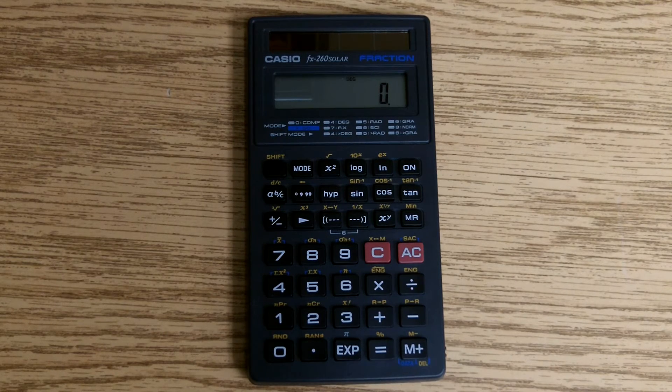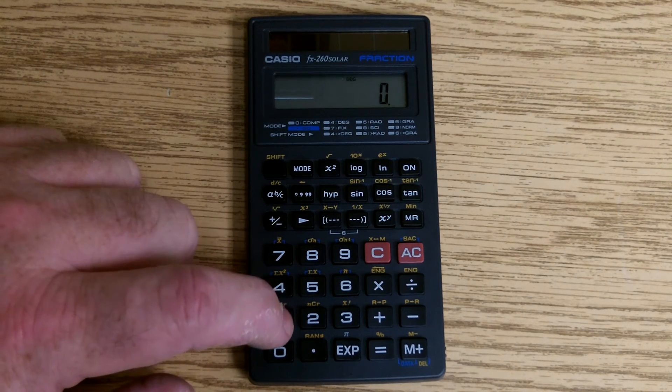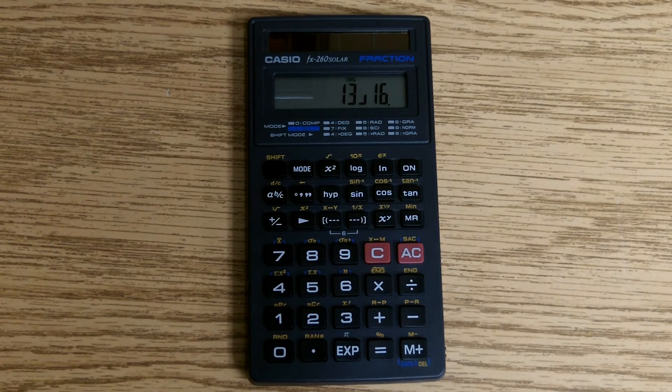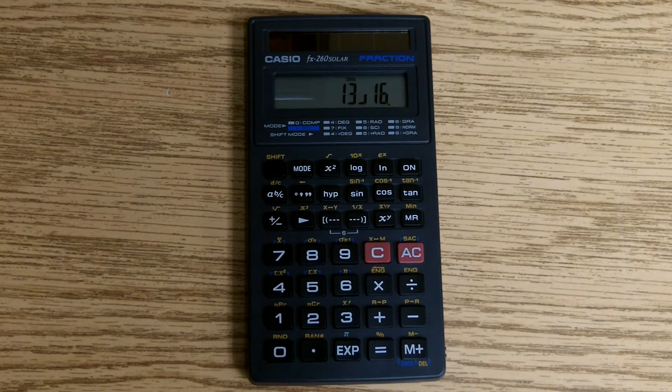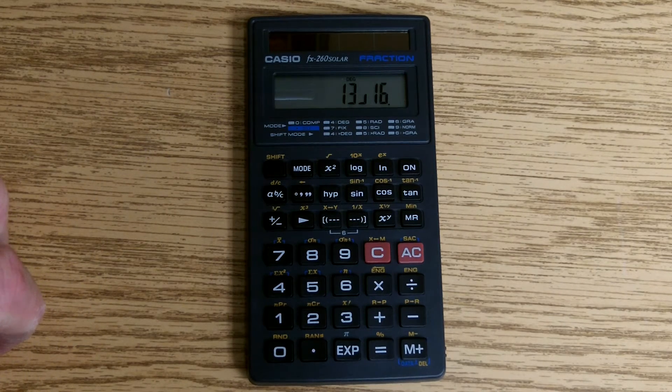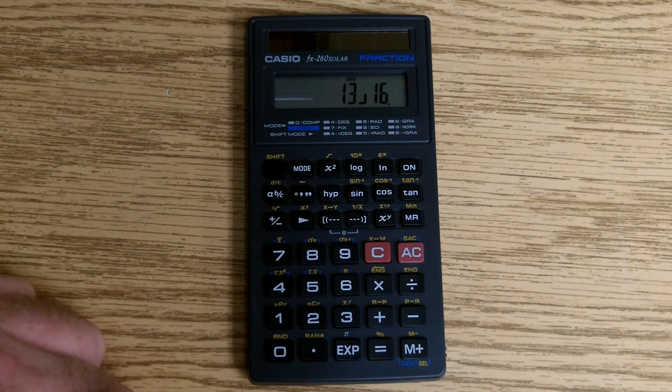If you have a fraction of say 13 sixteenths, and you want the decimal equivalent, once you have input the fraction, the 13 sixteenths, hit equals.